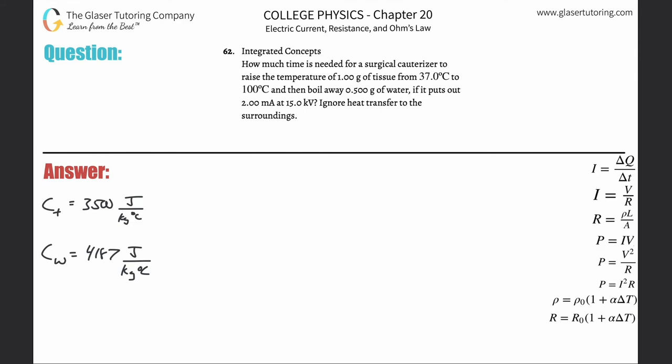Number 62, integrated concepts. How much time is needed for a surgical cauterizer to raise the temperature of one gram of tissue from 37 degrees Celsius to 100 degrees Celsius and then boil away 0.5 grams of water, if it puts out 20 milliamps at 15 kilovolts? Ignore heat transfer to the surroundings.